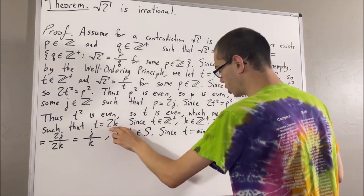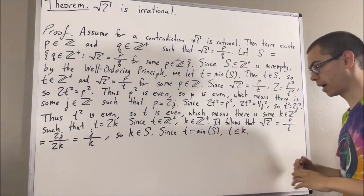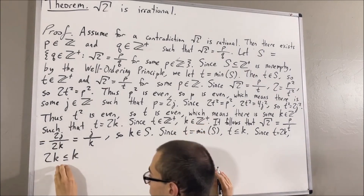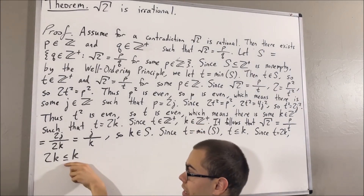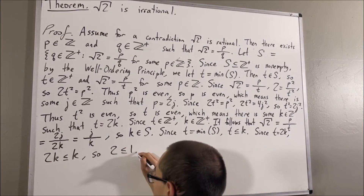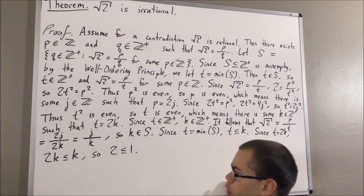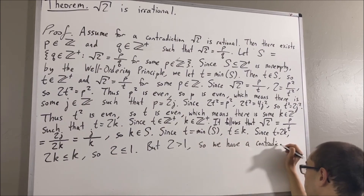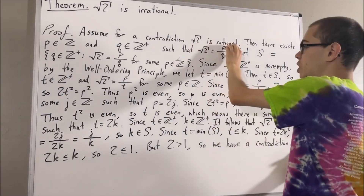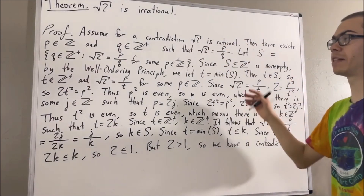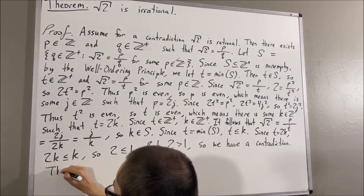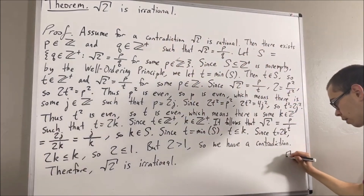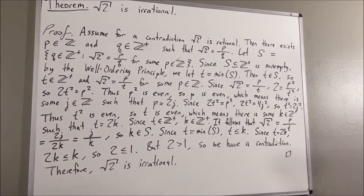But t is equal to two k, so we can substitute t for two k. Then, since k is positive, we can divide k on both sides of this inequality, and the sign of the inequality will remain the same. And we get that two is less than or equal to one. But we know that two is greater than one, so we've reached a contradiction. Our assumption that the square root of two is rational led us to a contradiction, so we must instead have that the square root of two is irrational. And that's exactly what we wanted to prove. So this completes the proof.